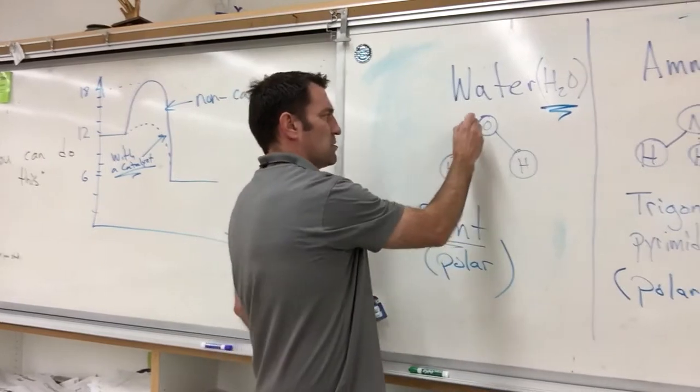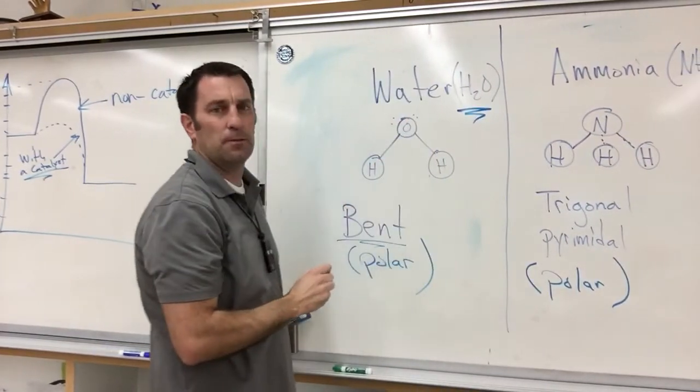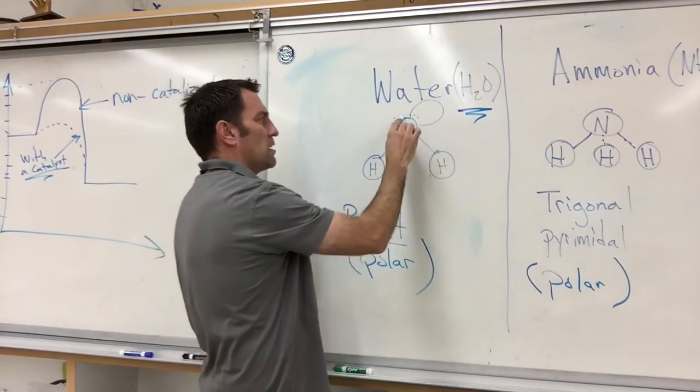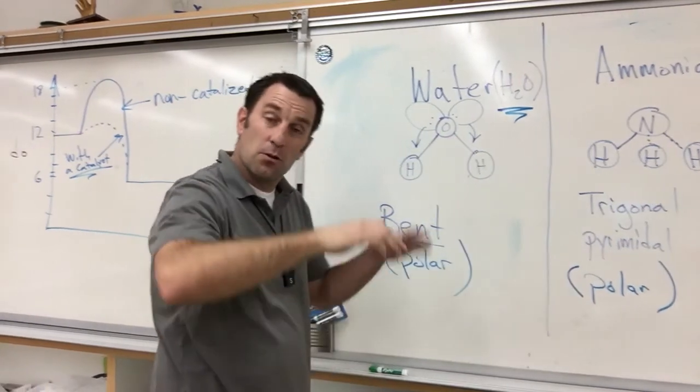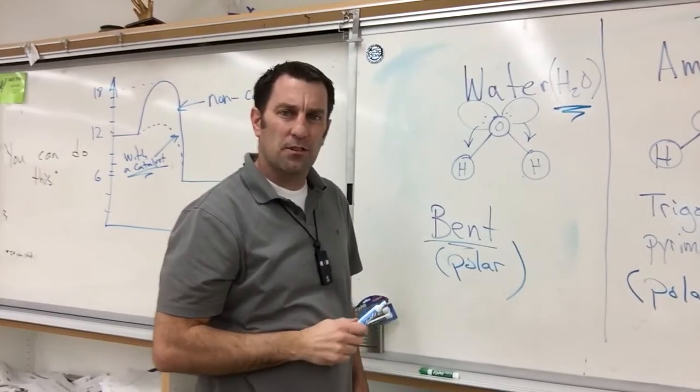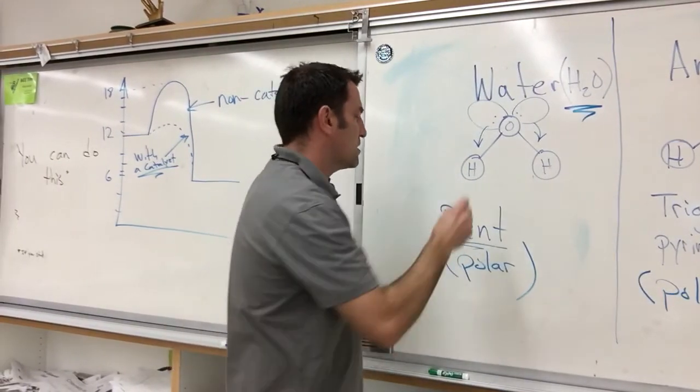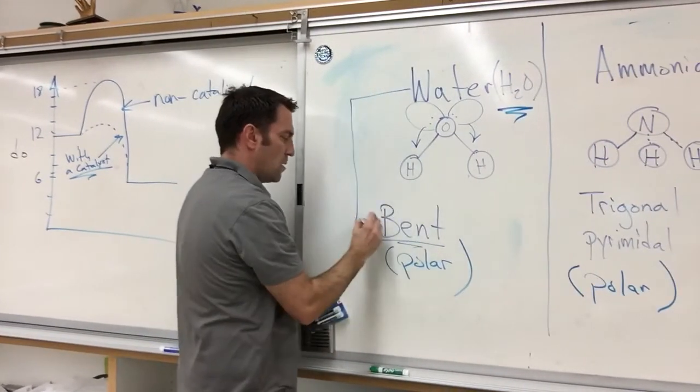Now, the reason it's bent is because there's some electron pairs up here, and they occupy space, and they push those clouds where the hydrogens are attached farther down. So you need to tie water to bent.